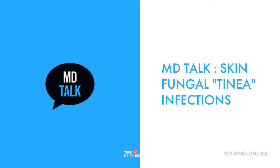Fungus can be thought of as yeast or mold. Yeast is just a single cellular organism that reproduces by budding. Mold is usually multicellular in morphology and usually found in the shape of hyphae. Hyphae are just these long filament structures. Fungi can also appear as a combination of both yeast and mold.